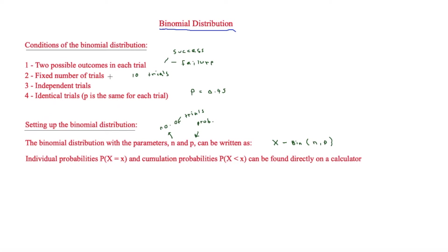Individual probabilities — P(X = x) — and cumulative probabilities — where P is less than, more than, or more than or equal to x — can both be found directly on a calculator, which this video will show how to do.